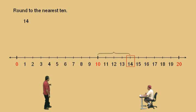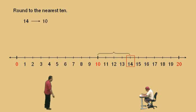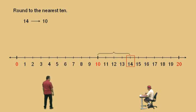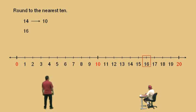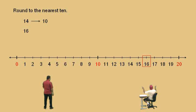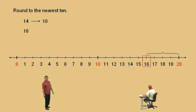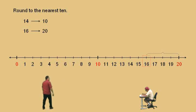It's closer to the 10, and therefore 14 rounds to 10. That's right. Okay, let's do another one. Let's try 16, Charlie — pay attention. Which 10 is it closer to? That would be the 20, and so 16 rounds to 20. Very nice.